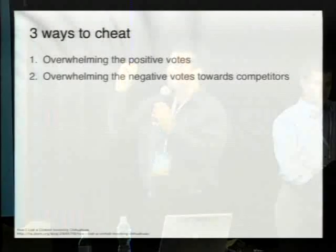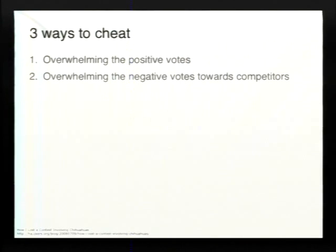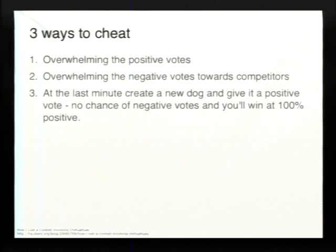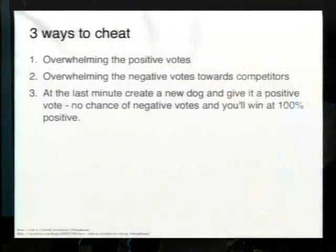In this particular contest there were three ways to cheat. One is you can ballot stuff — put overwhelmingly positive votes on your dog. You can put a whole bunch of negative votes against your top competitors and stuff it that way. And there's a third way: at the very end of the contest, if you knew when it was going to end, you could put in your dog at the last minute, put one positive vote, and win because you had the best overall percentage.